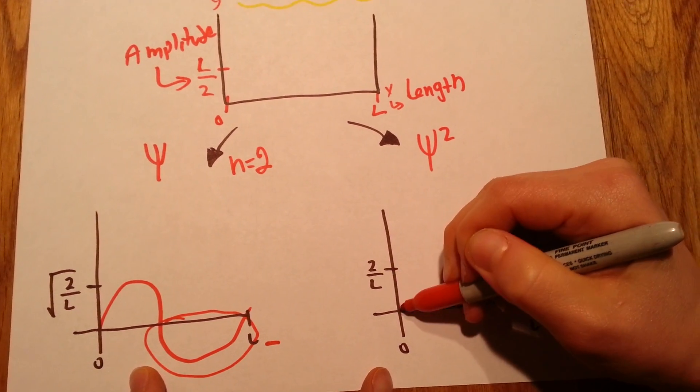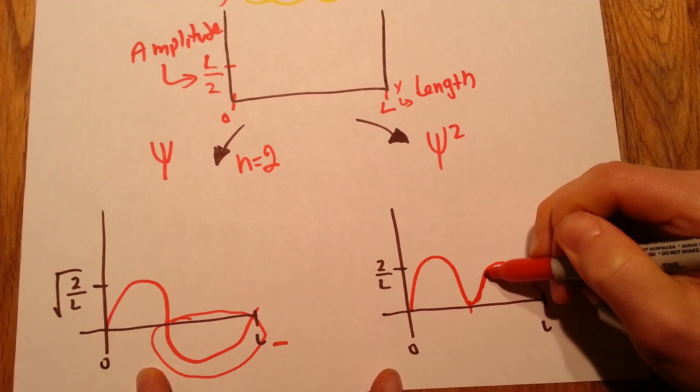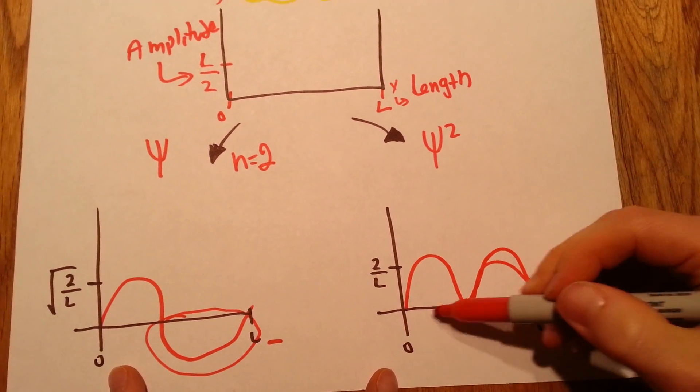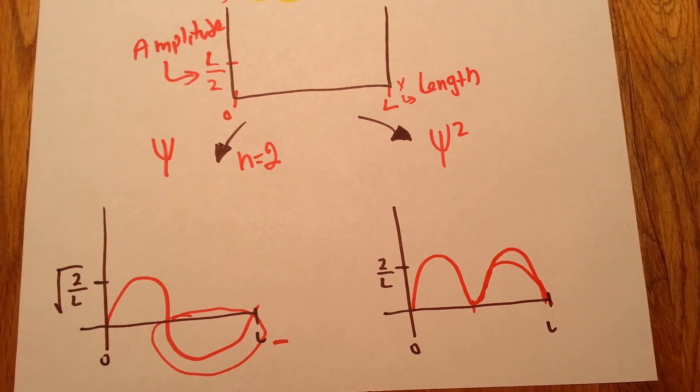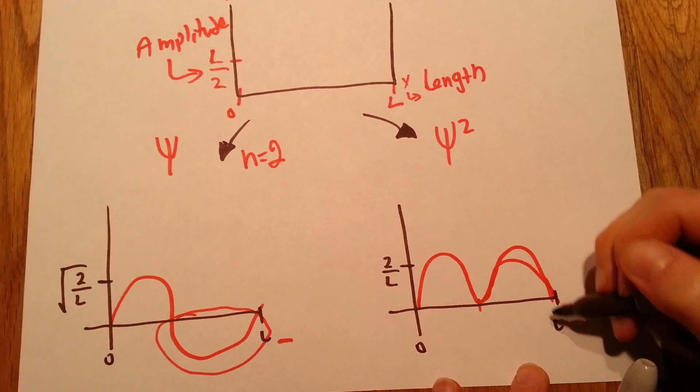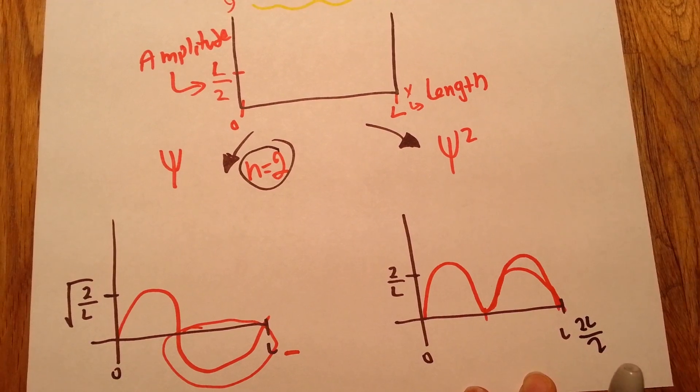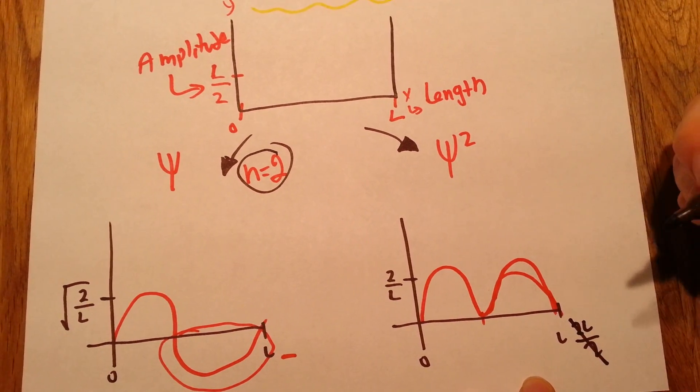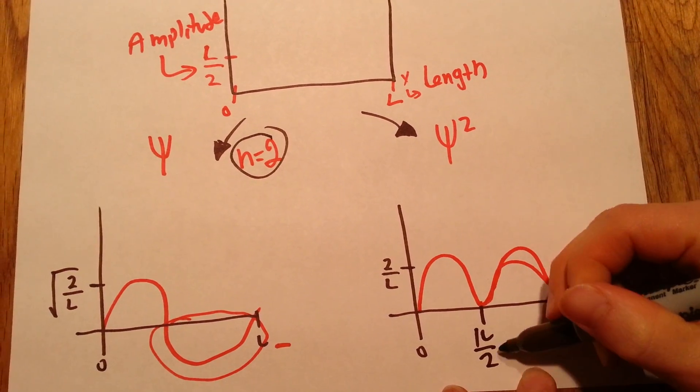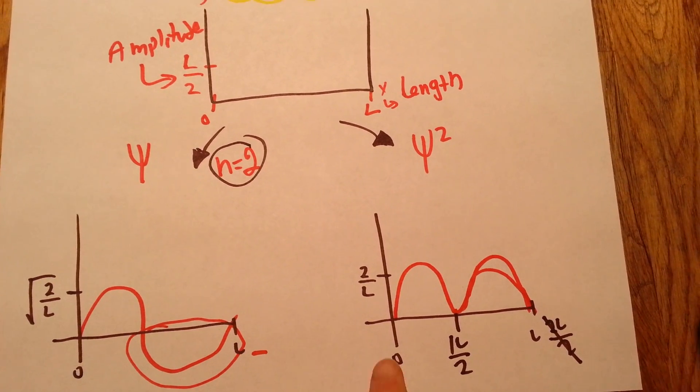So the function will look something like this. This is a really bad drawing, but you got the point. You're not going to have a negative in here. And the way you would label it, L would be the maximum length. The maximum length for n equals 2 would be 2L over 2, which essentially is L because 2 and 2 cancels out. And half of it will be 1L over 2, which is just L over 2. And 0 is the beginning, where the box starts.